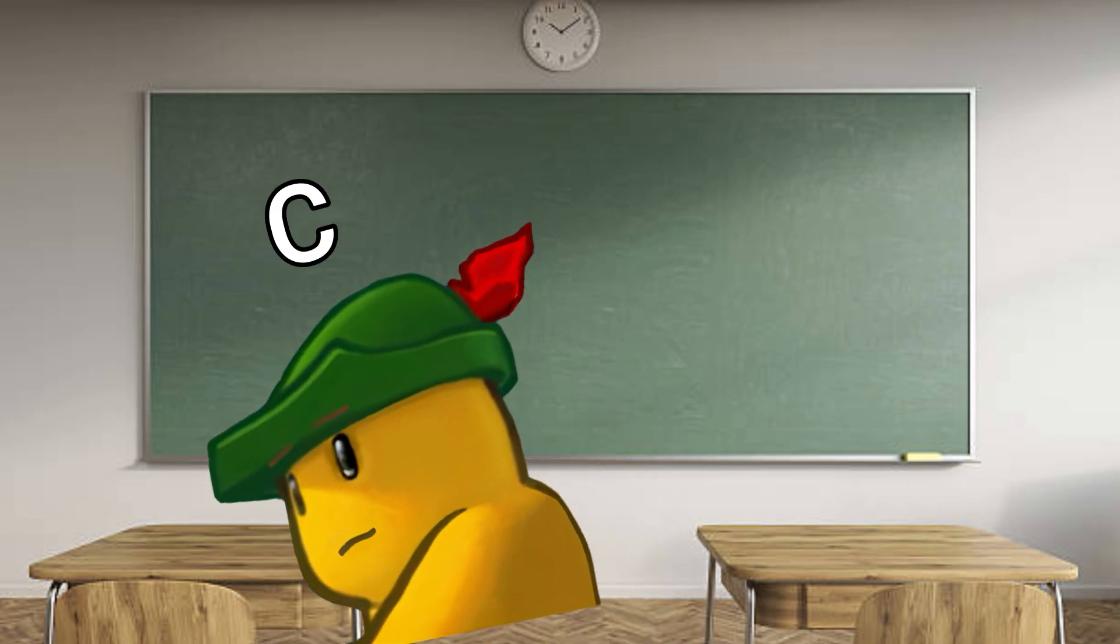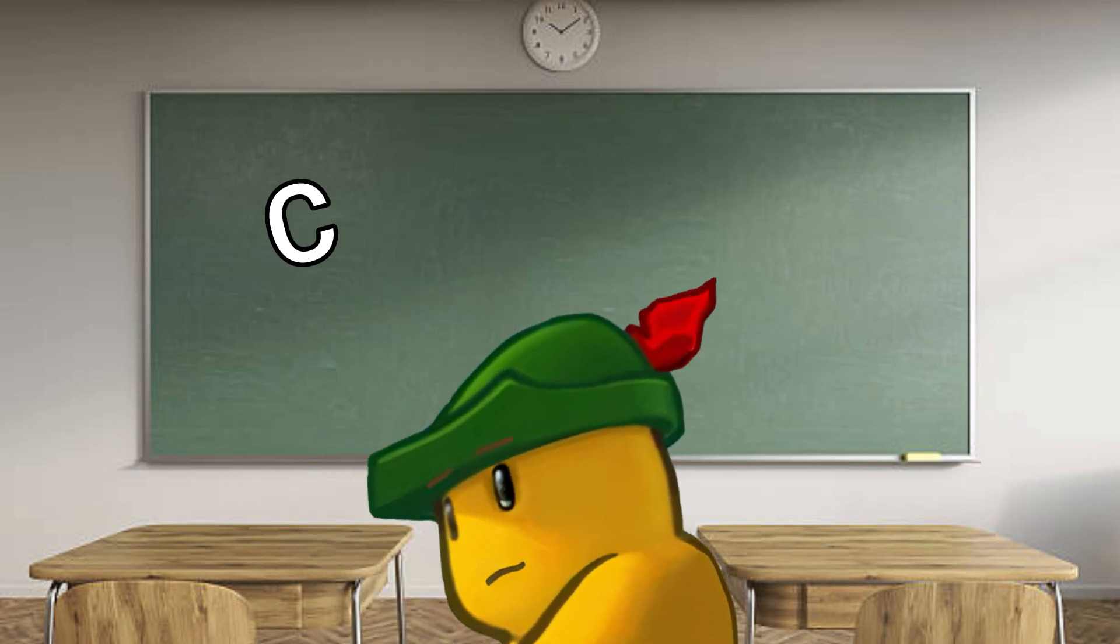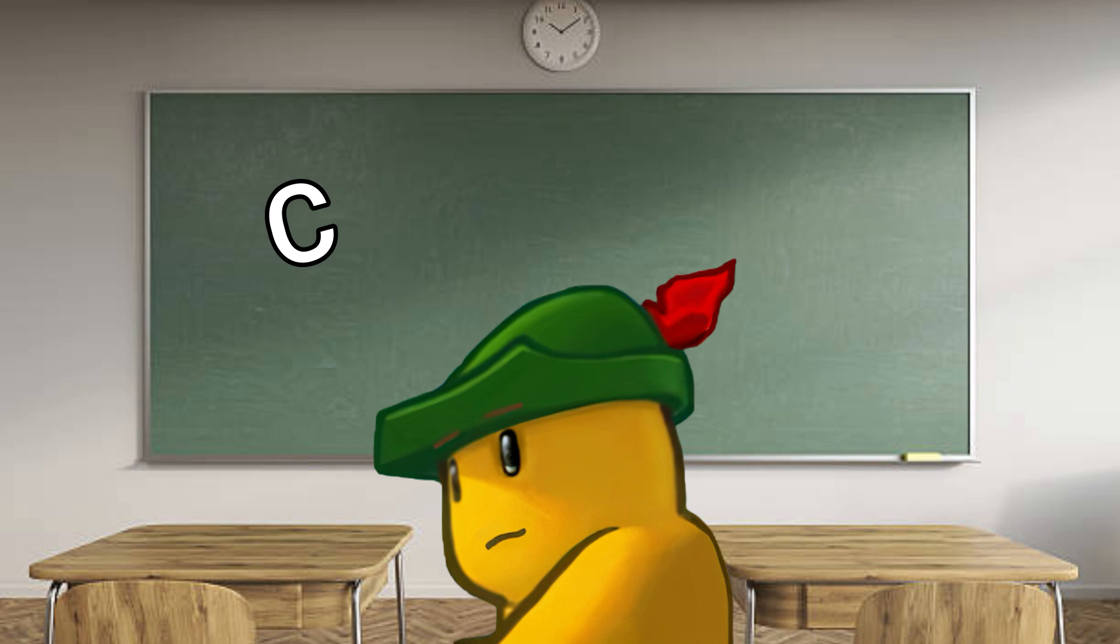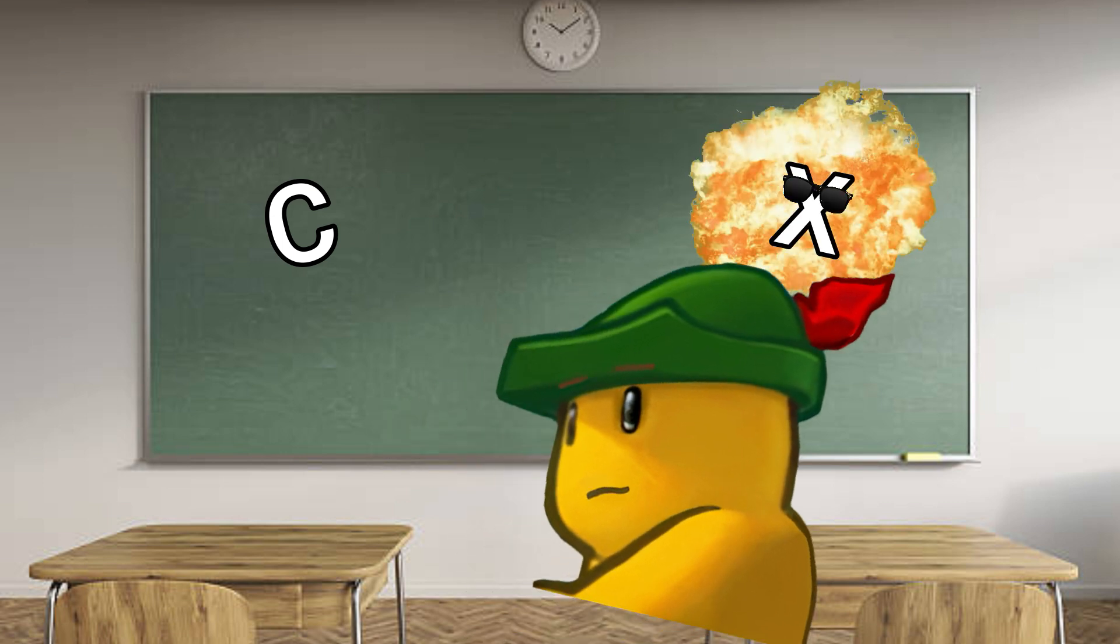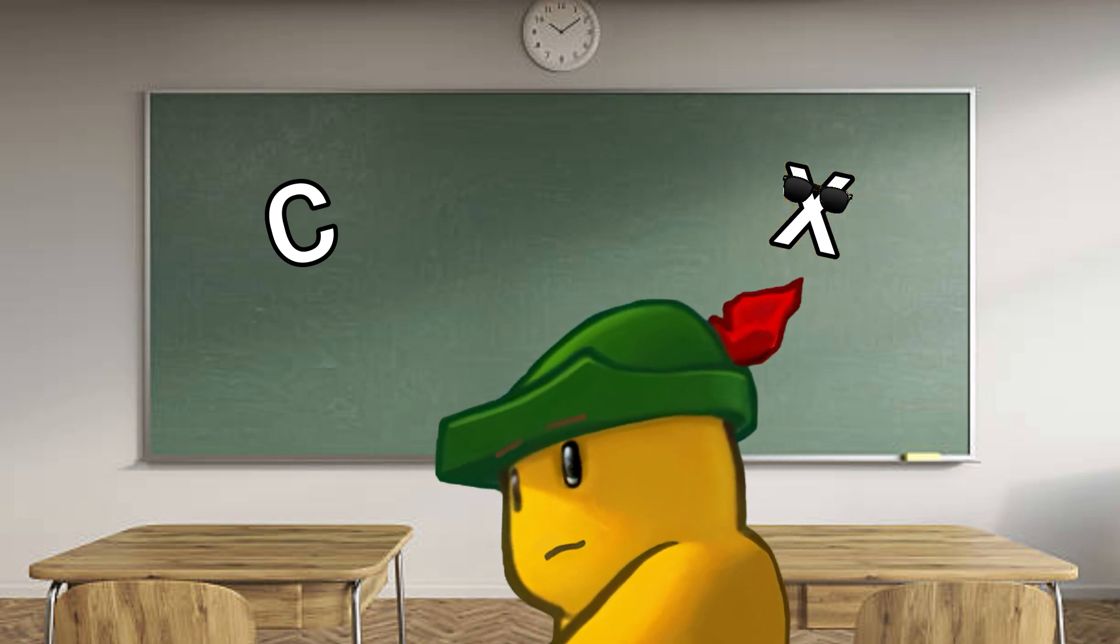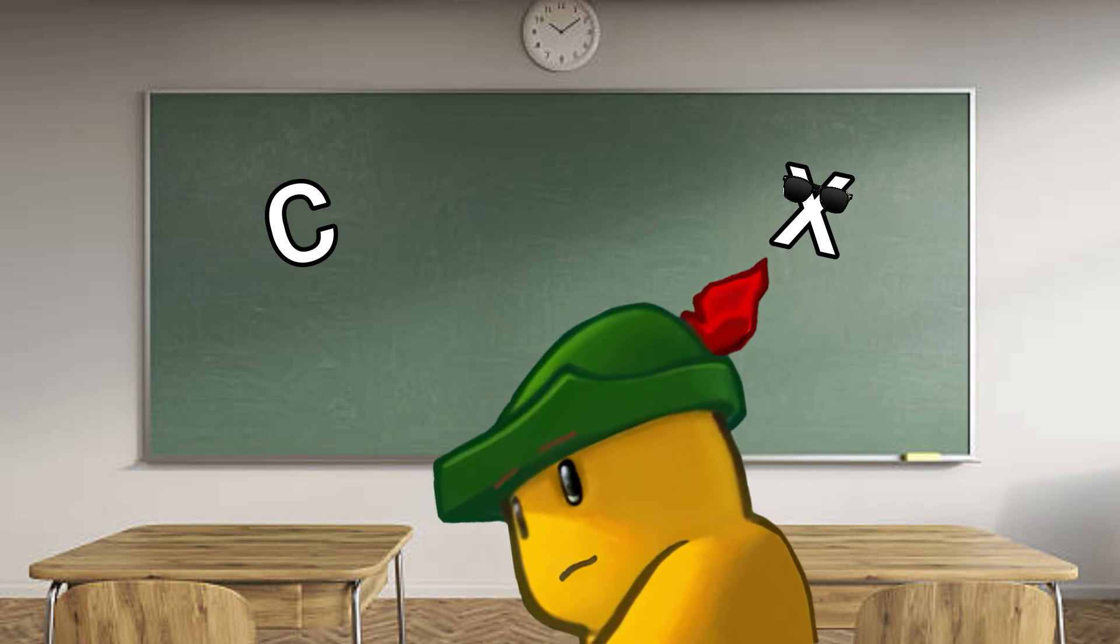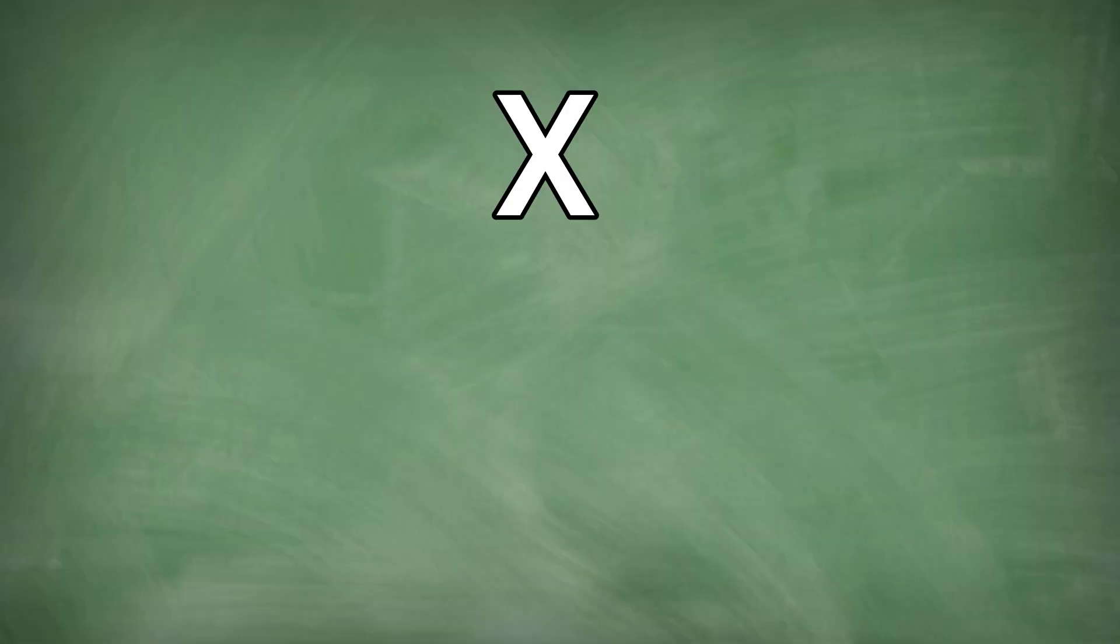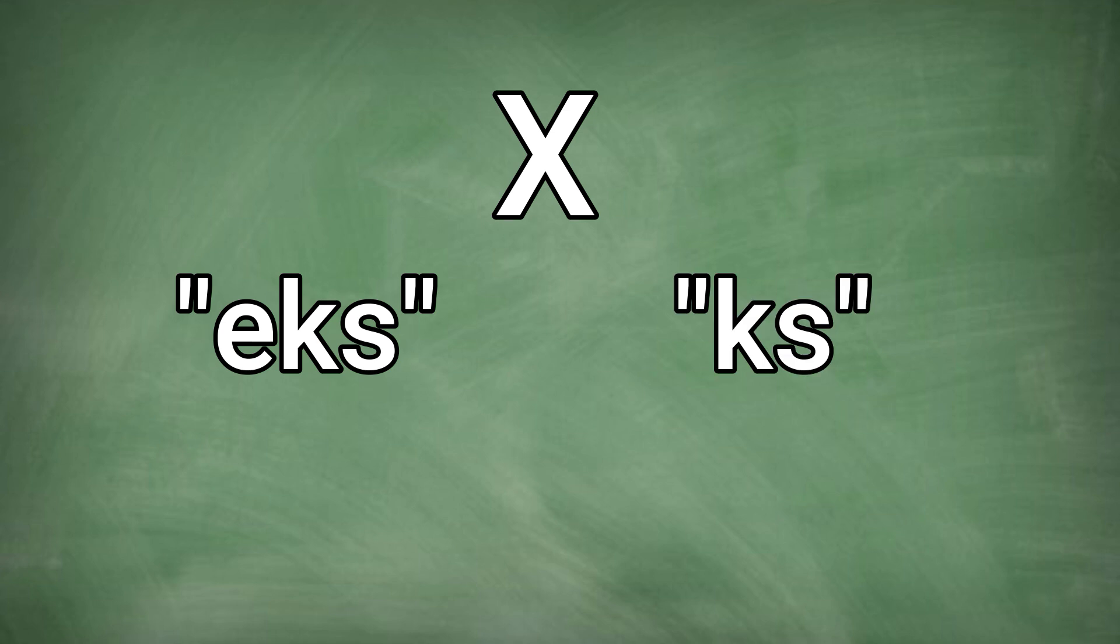While C is a dumb letter because it sounds exactly like two other letters in the alphabet, that X, being the most cool letter in the alphabet, more or less follows the same kind of line. X is always pronounced as EKS or KS, like in weeks. It also always has an E in front of it, which is weird.